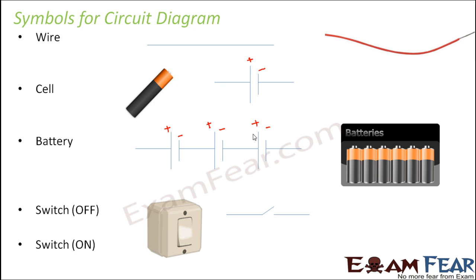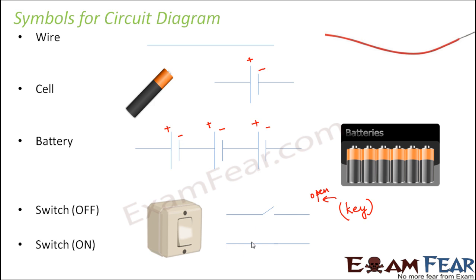For the switch, when the switch is off, the circuit is broken and current doesn't flow — this is represented by an open symbol. A switch is often called a key in a circuit. When the switch is off, the key is said to be open, and the circuit is called an open circuit. When the switch is on, a complete path is created and the key is said to be closed. So switch off equals open key, and switch on equals closed key.